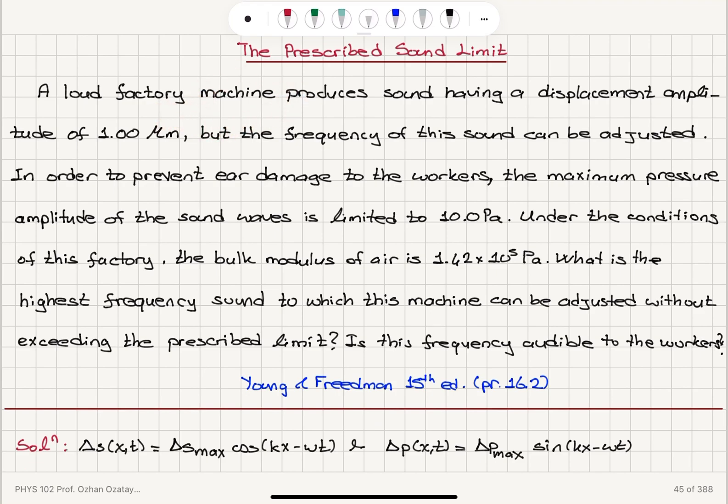So we have a prescribed sound limit in a loud factory. The machine, a loud factory machine is producing sound with a displacement amplitude of one micrometer and we can adjust its frequency. And the maximum pressure is limited to 10 Pascals in order to save the ears of the workers. And the bulk modulus of air is given. What is the highest frequency that we can have so that we don't exceed the prescribed pressure limit? And is this frequency audible?